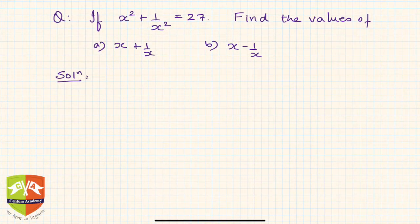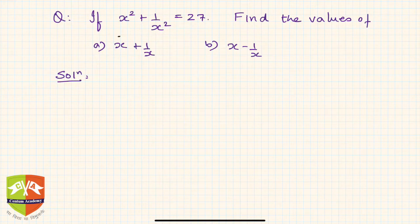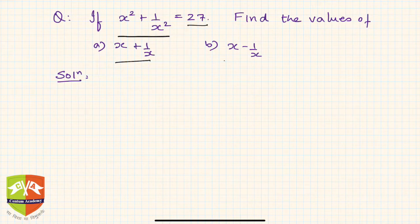Welcome friends. Continuing with our series on problem solving, let's try to solve this problem. It's given that x squared plus 1 by x squared is 27. Based on this information, you have to find the value of x plus 1 upon x and x minus 1 upon x.